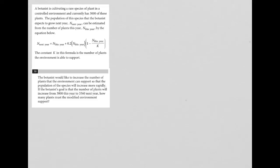Here's question number 38, which is kind of like part two of the information provided here. We already know that this is the equation provided for us to figure out how this population of plants is growing year over year. Question 38 says the botanist would like to increase the number of plants that the environment can support.